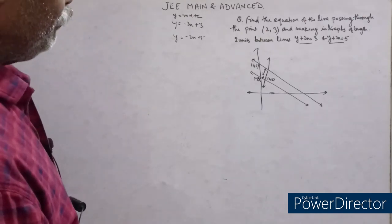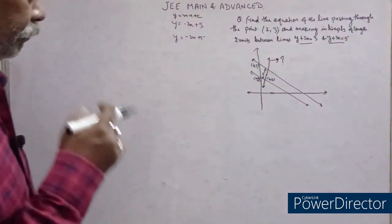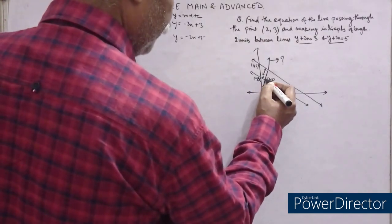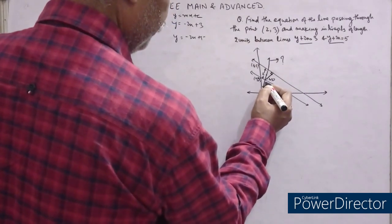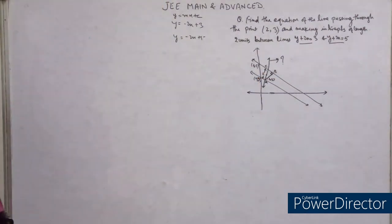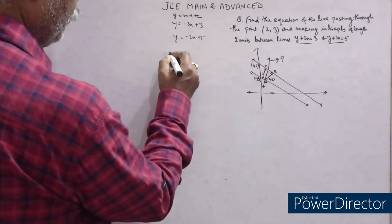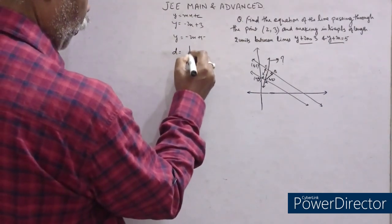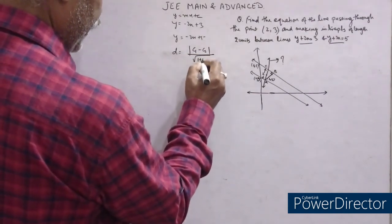This intercept is 2 units. We have to find the equation of this line. Let me find the perpendicular distance — this is the perpendicular distance between the two parallel lines. Let this be A, B, and C. Let us find the perpendicular distance between these two lines. The formula for distance between parallel lines is D = |C₁ - C₂| / √(1 + m²).